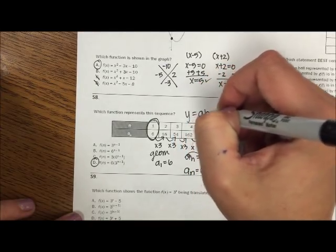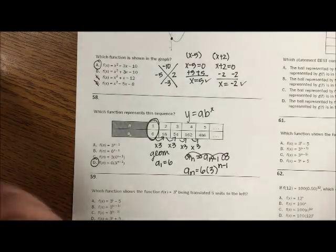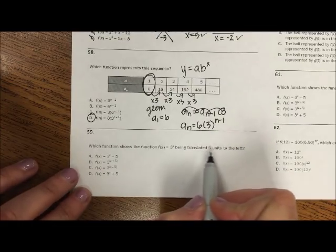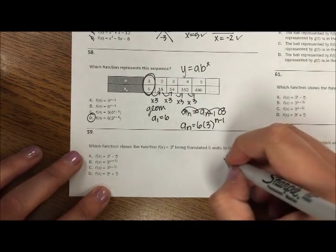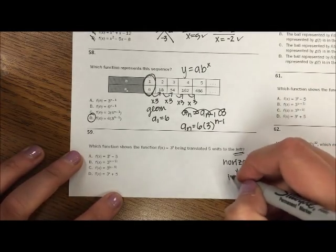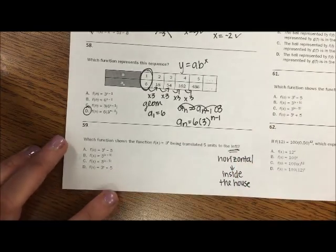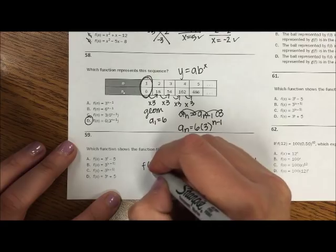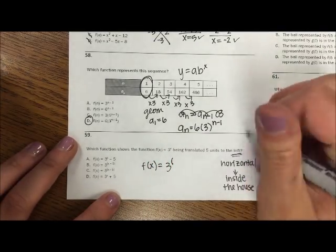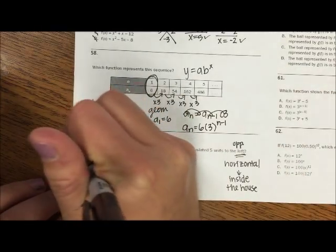So how I start times how I change to the n minus 1 would be the most appropriate. So that would be option D. Remember, how I start, how I change to the x. Well, how I start to the change to the n minus 1 is how we deal with sequences. Which function shows the function f(x) = 3^x being translated 5 units to the left. So the left is horizontal. And horizontal is inside the house. So inside the house, they are inside the parentheses. Okay, and my parentheses are up in the exponent. And if it's to the left, I'm doing the opposite. So I'm just going to be writing x plus 5. So B would be my option.